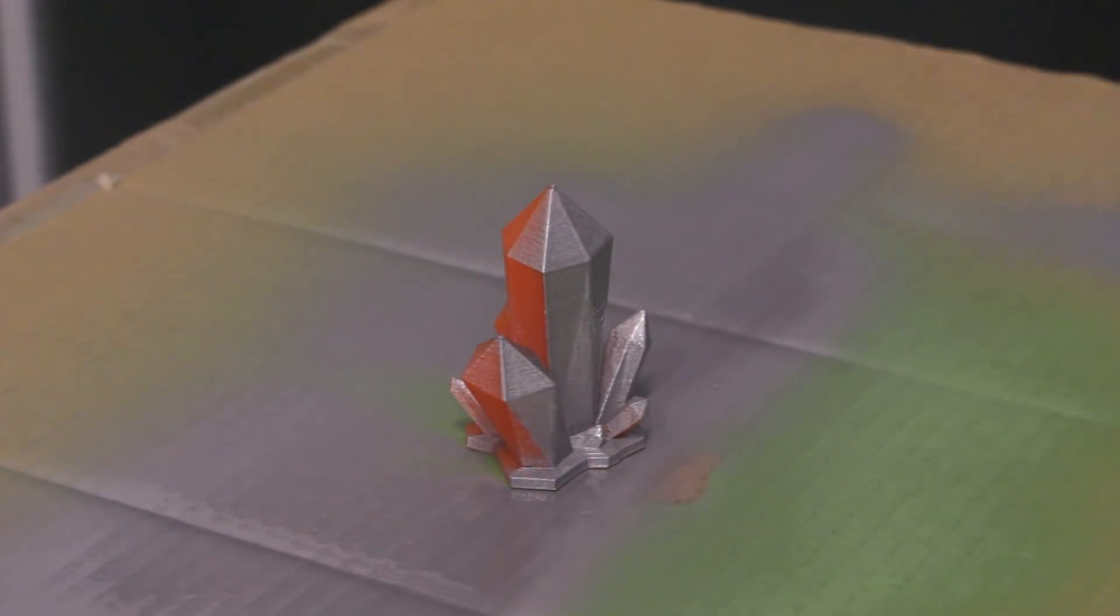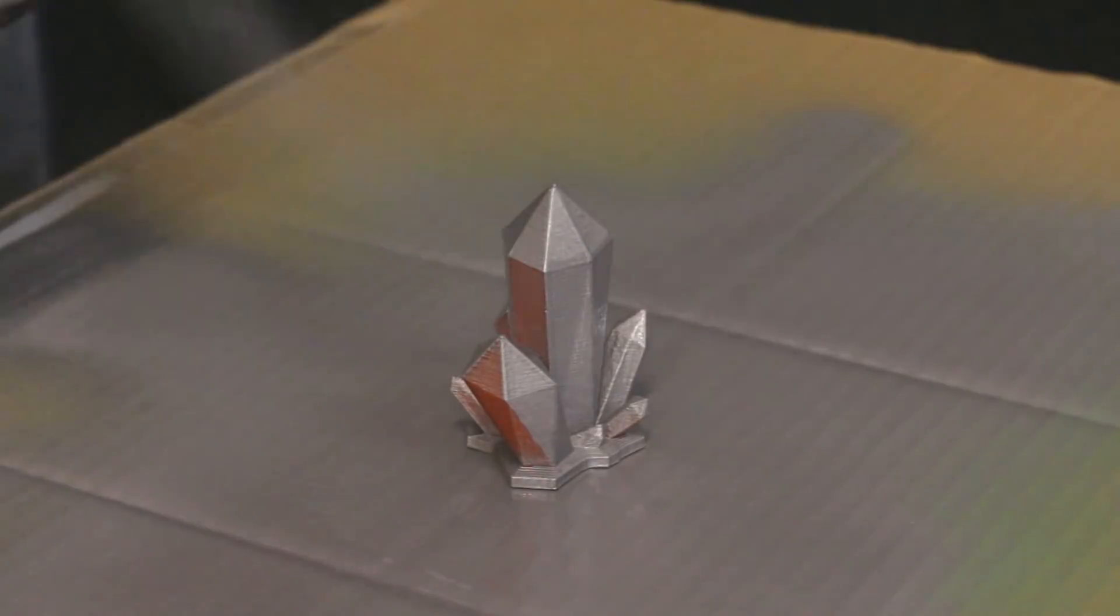Before we start the main part of the experiment, we have to prepare our gem with a coat of ceramic paint. Remember to use spray paint only in a well-ventilated area and always wear a mask.